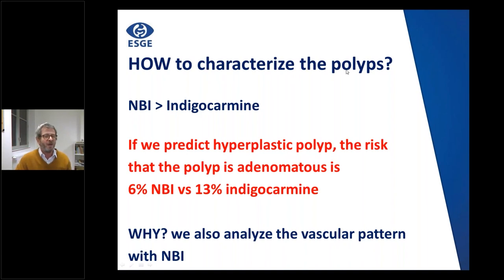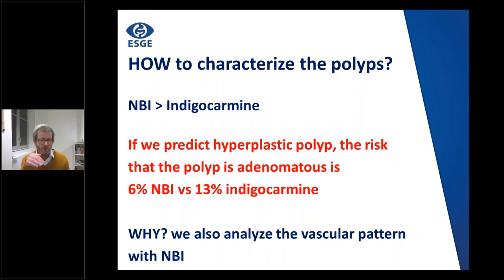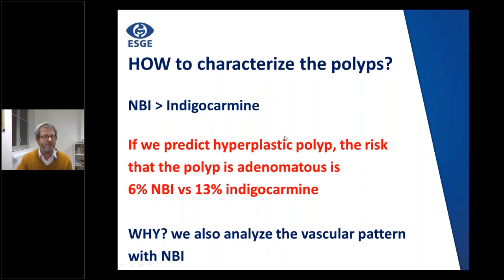How to characterize polyps is the core of my presentation. We now have NBI. NBI uses blue light, which is absorbed by vessels and by the superficial layer of the intestinal wall, helping to better analyze vessels and mucosal pattern. It has been demonstrated that when predicting a hyperplastic polyp, the risk of it being finally adenomatous is lower with NBI than with indigo carmine — 6% versus 13% — because NBI also analyzes the vascular pattern.